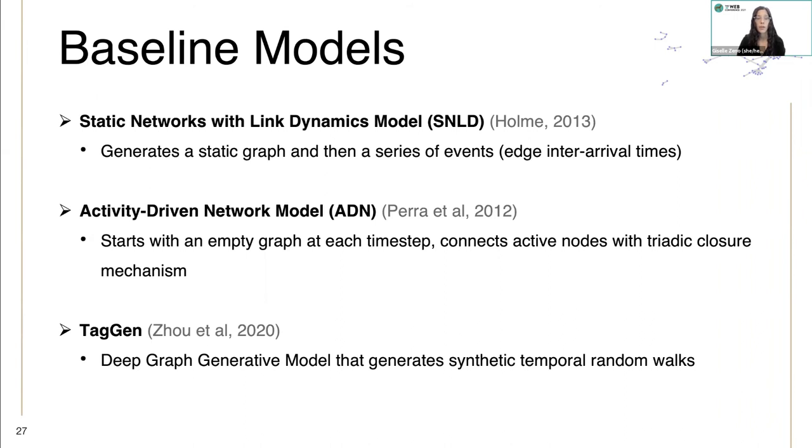The baseline models that we compare to are the static networks with linked dynamics model, which generates a static graph and then a series of events or edge inter-arrival times. The activity-driven network model starts with an empty graph at each time step and then connects active nodes with a triadic closure mechanism. Lastly, CACGen is a deep graph generative model that generates synthetic temporal random walks.